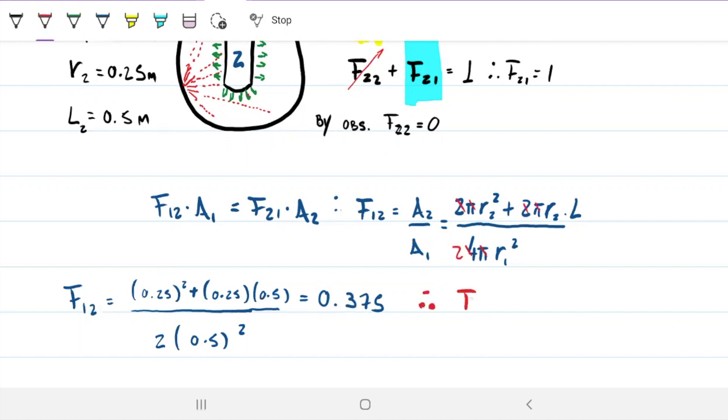And if this is the case, therefore F11 has to be 1 minus 0.375, which is 0.625.